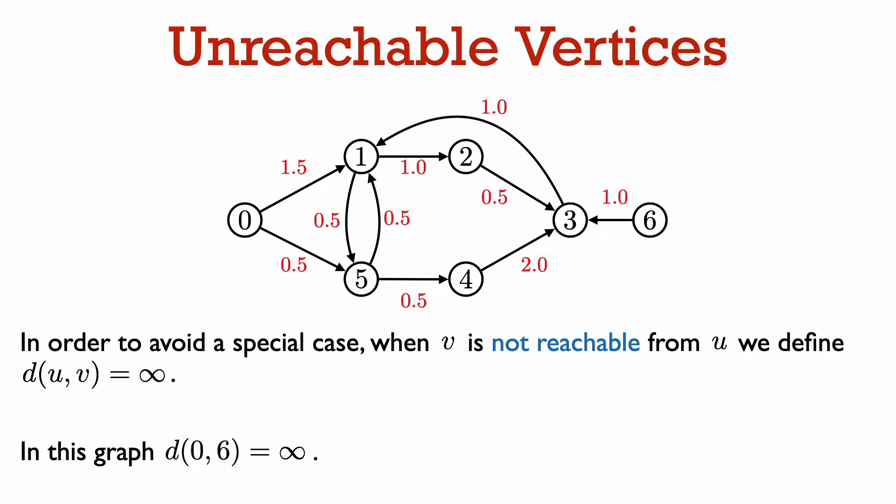Also, in order to avoid a special case, when vertex v is not reachable from vertex u, we define the distance from u to v to be infinity. So for example, in this graph there is no path from vertex 0 to vertex 6, so we say the distance from vertex 0 to vertex 6 is infinity.